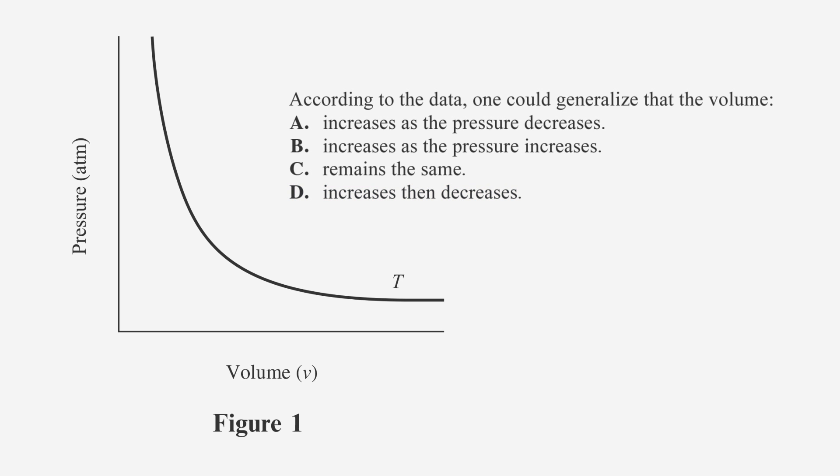To help visualize the answer, you can annotate the charts by drawing arrows that indicate the direction of the pressure and volume on the axis. As the volume increases, the slope of the curve goes down, which means that pressure decreases, so A is the best answer.